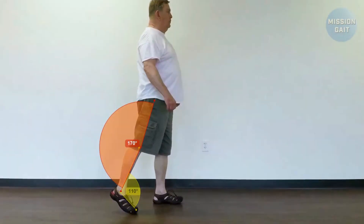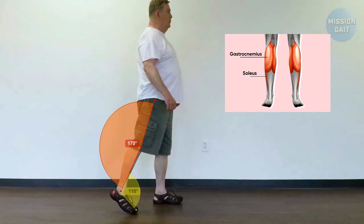At late stance or pre-swing stage, we may observe lack of knee flexion and ankle plantar flexion — prerequisites for push-off and preparation for swing. These occur due to the tightness of calf muscles.